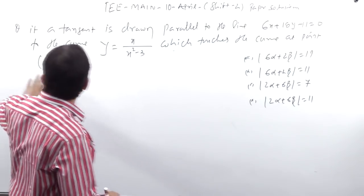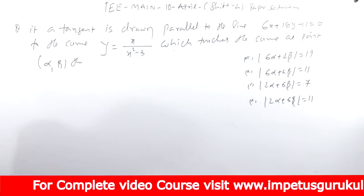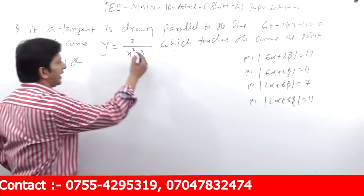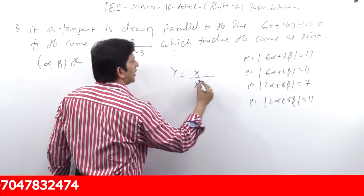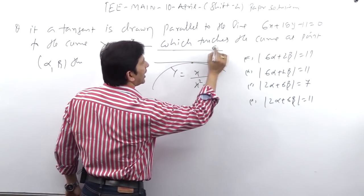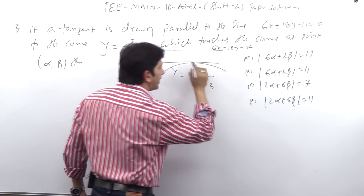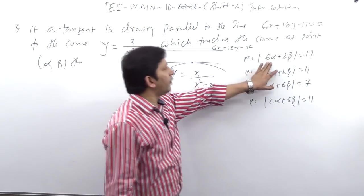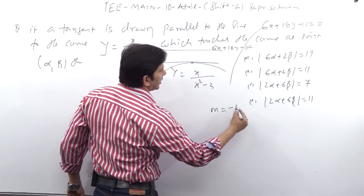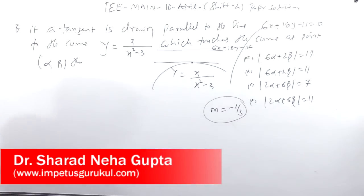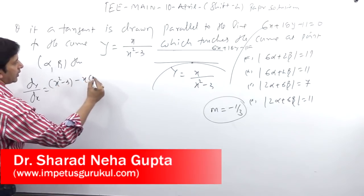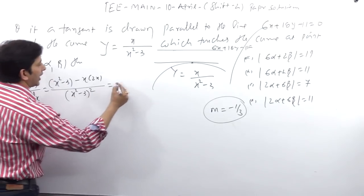Next question: if a tangent is drawn parallel to the line 6x + 18y - 11 = 0 to the curve y = x/(x² - 3), find the point of contact. The slope of the given line is -1/3, so we equate dy/dx = -1/3. Differentiating y = x/(x² - 3) gives dy/dx = -(x² - 3) / (x² - 3)² ... setting equal to -1/3.